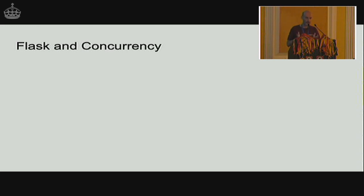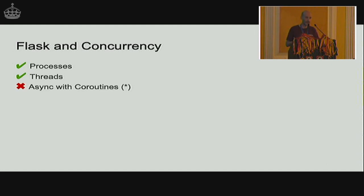This is about Flask specifically, though many things also apply to other frameworks. We can do concurrency in Flask with processes — fully supported. We can do it with threads as well — fully supported, Flask has no problem with this. The bad news is that the coroutine-based async approach is incompatible with Flask; there is absolutely no way today to use Flask with coroutines, which means asyncio is out. But Flask does support greenlets, which is another way to do async concurrency.